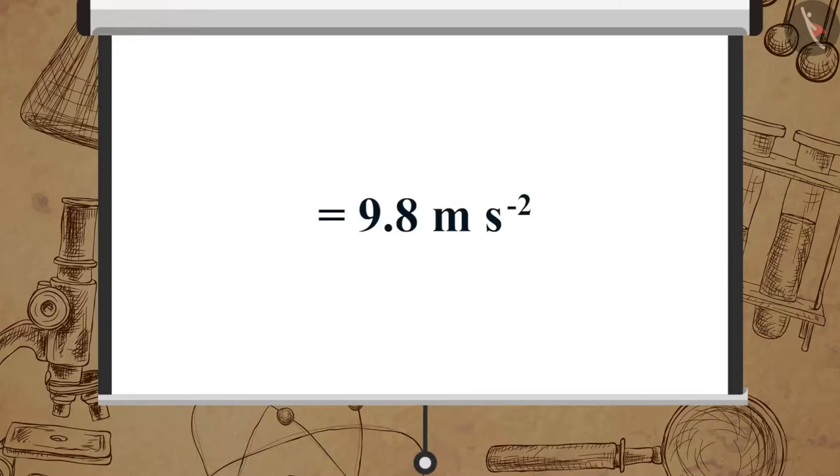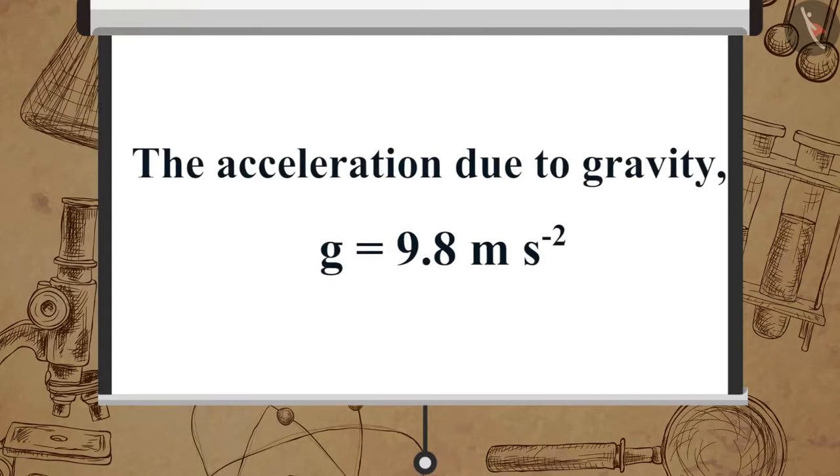Which is equal to 9.8 meters per second square. Therefore, the acceleration due to gravity g is equal to 9.8 meters per second square.